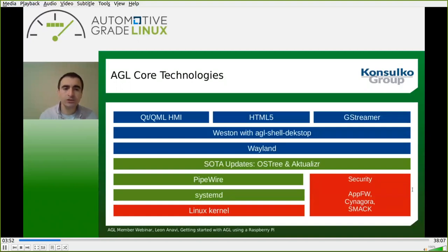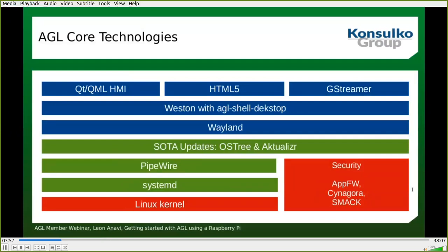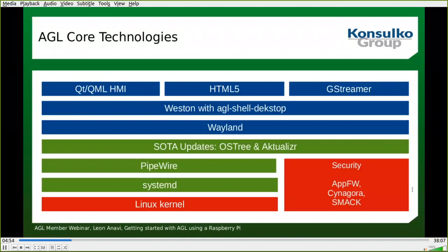Let's have a look at some of the AGL core technologies. AGL is a Linux distribution, but it's completely different from what we have on servers or laptops. There is a Linux kernel, a bootloader, and the security in AGL is very specific as it relies on SMACK, Cynara, and the application framework. AGL is based on systemd. Pipewire is used for the audio framework. Software over-the-air updates are done using OSTree and Aktualizr, both enabled using the AGL SOTA feature. The graphical user stack is based on Wayland with Weston, with Qt and QML applications on top. HTML5 applications are also supported.